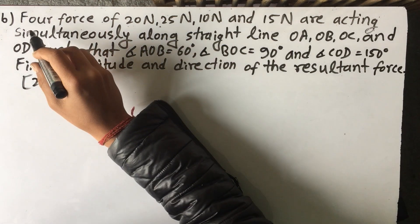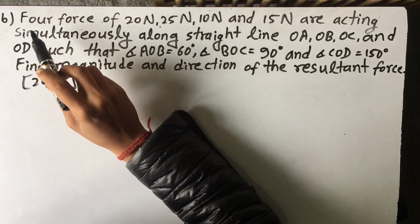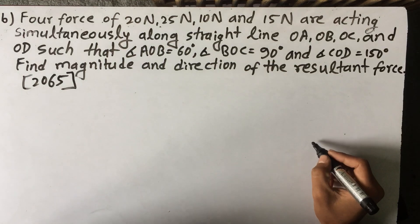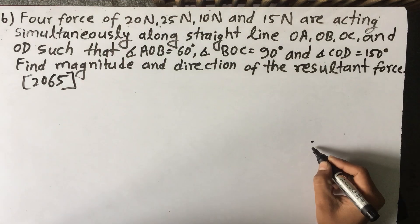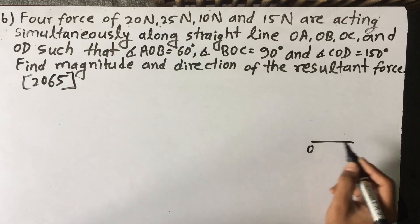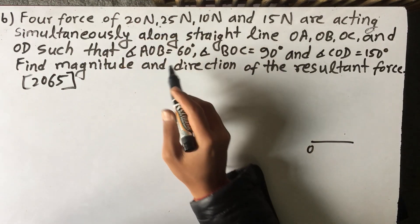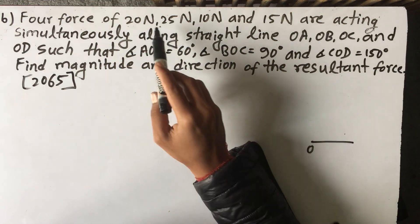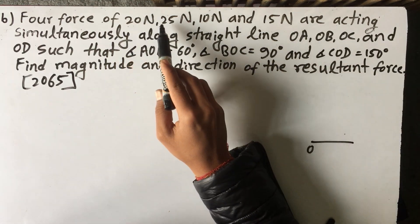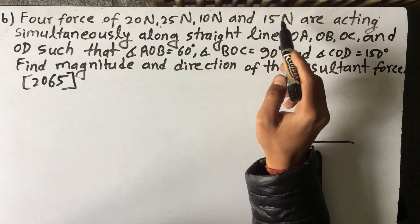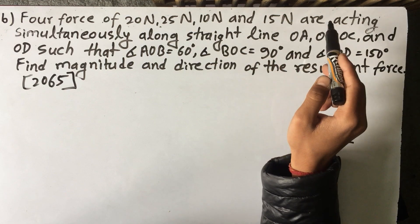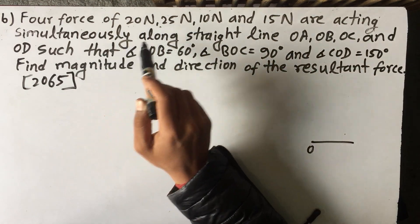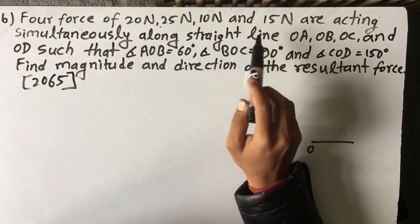I am going to make a four-force problem. B is Newton — 20 Newton, 25 Newton, 10 Newton and 15 Newton are acting simultaneously along a straight line.